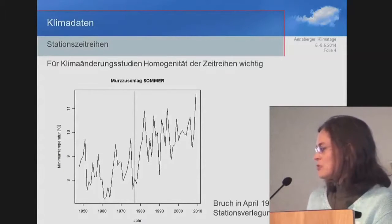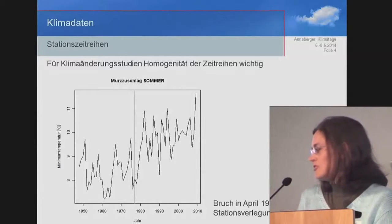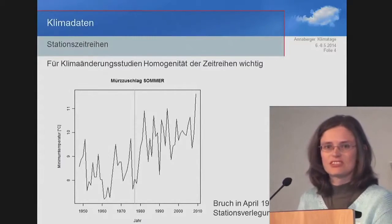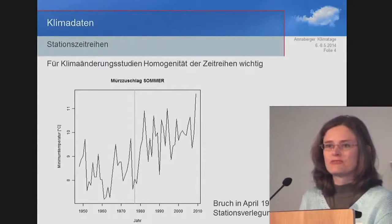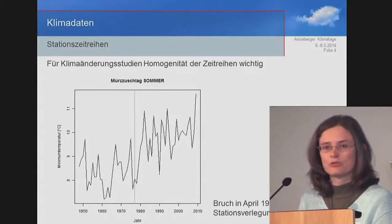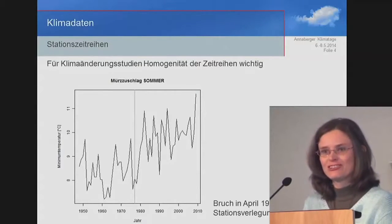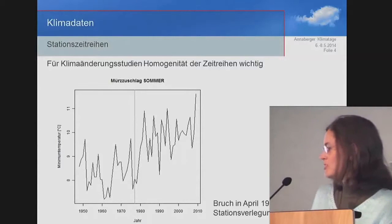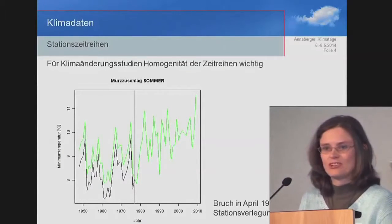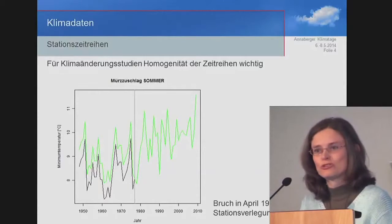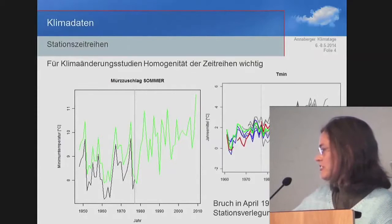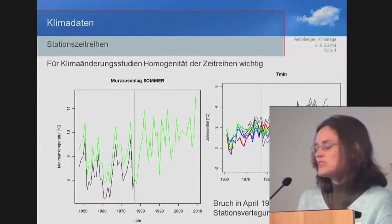When looking at the time series we have in this graph, we can see that there's a certain problem. In 1977, this station was actually relocated, moved to another location. This is not very good for the stability of the datasets. That is why, during the past two years, statistical methods have been developed to change the time series in order to have a correlation to the former place. So the actual conditions are adjusted to what would have been the case if it had not been relocated, and we now have the curve after statistical adaptation and adjustment.